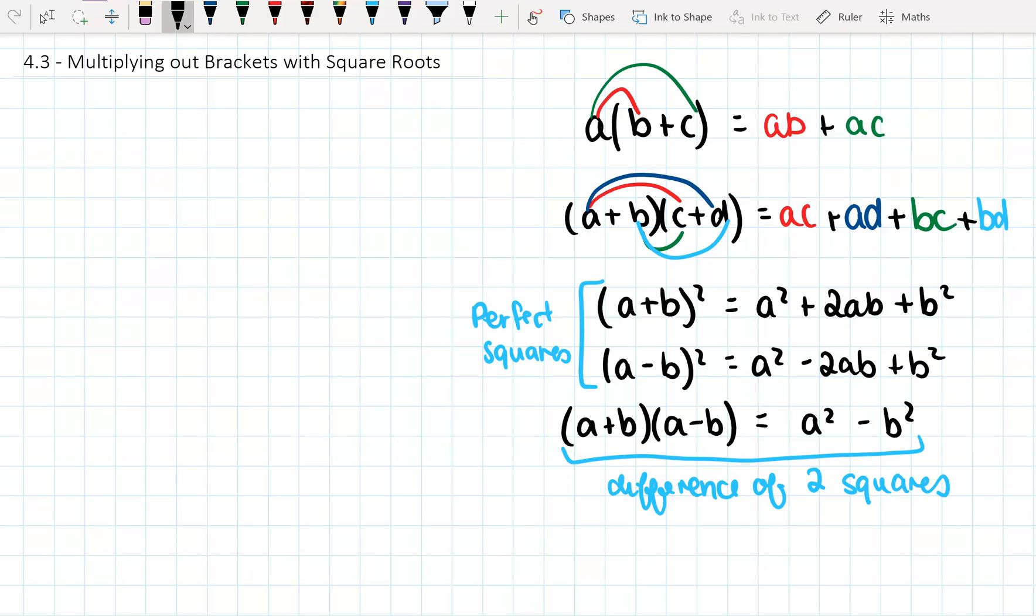So let's start with a version with just a(b + c). So for example, if I have 2√5, and then in brackets, 3√6 + 2. Okay, now, we multiply the first terms. So 2√5. Might do this in colour to match what we did before. So we get 2√5 times 3√6.